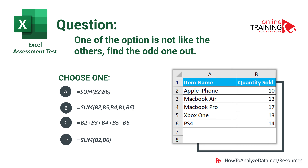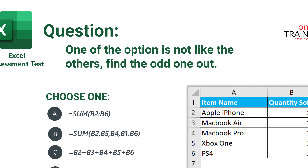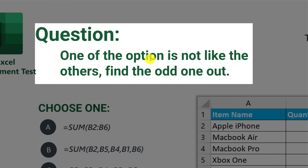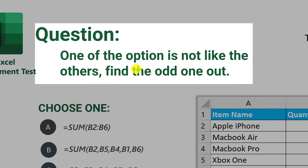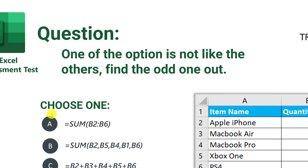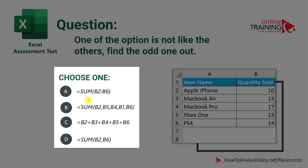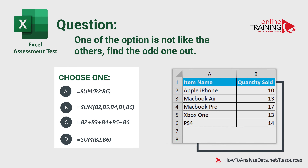Here's a question testing your knowledge of Excel formulas and functions — one of the options is not like the others, find the odd one out. Choice A is a SUM function over a range, choice B is SUM listing individual values, choice C adds five values without using SUM, and choice D is SUM(B2,B6). Which one do you think is the odd one?